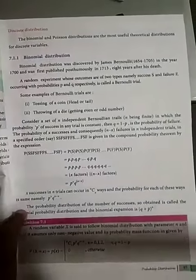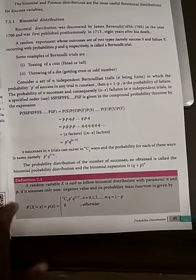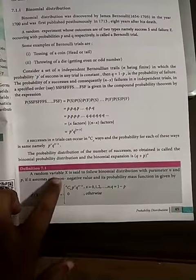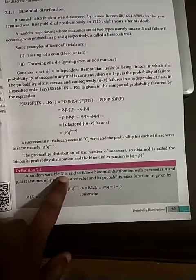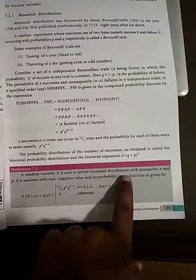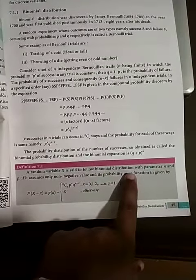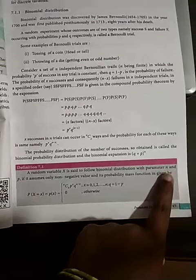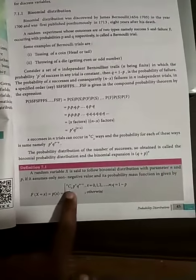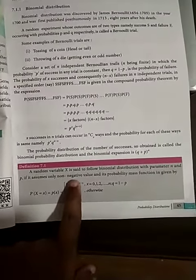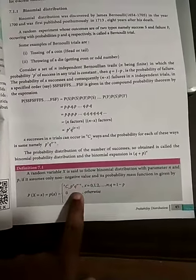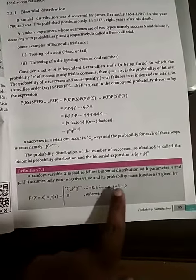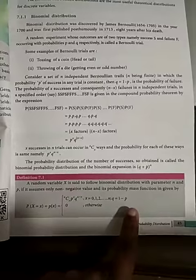Coming to the binomial distribution definition: a random variable X is said to follow the binomial distribution when n parameters are involved. The distribution is: P(X) = nCx · p^x · q^(n−x), where p + q should always be equal to 1.